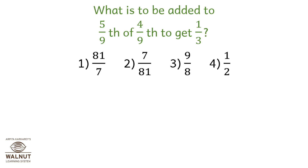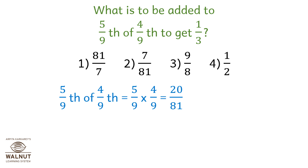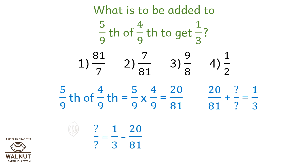What is to be added to 5/9 multiplied by 4/9 to get 1/3? 5/9 × 4/9 is equal to 20/81. So 20/81 + x = 1/3. Therefore, x = 1/3 − 20/81 = 27/81 − 20/81 = 7/81.